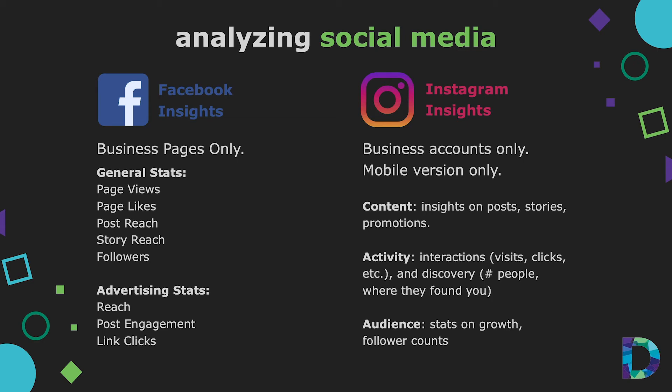Every major channel provides users with insights into their social media activity and how things are working. To access analytics, some channels require that you have a business account or business page. For example, Facebook and Instagram require business tier accounts, but Twitter doesn't. Based on feedback from participants in this program, much of your activity is focused around Facebook and Instagram, which is why we're focusing on these in this session. In the case of Instagram, its insights are available through its mobile app only — you can't access it from your computer or laptop. In the case of Facebook, you can access insights from your business page and get information on things like page views, likes, your reach from various posts and stories, and if you've added any followers. If you're advertising on Facebook, you can access specific ad metrics as well.